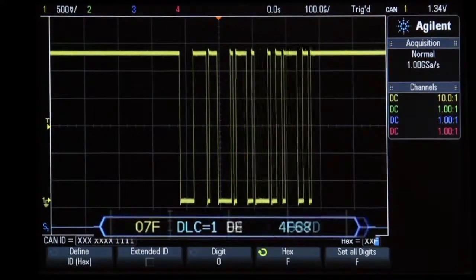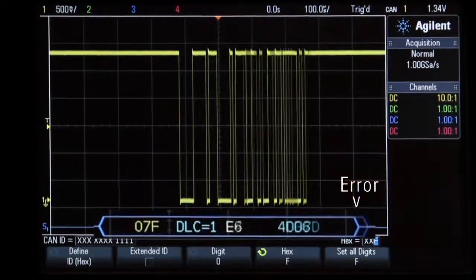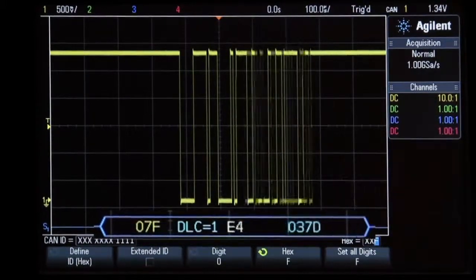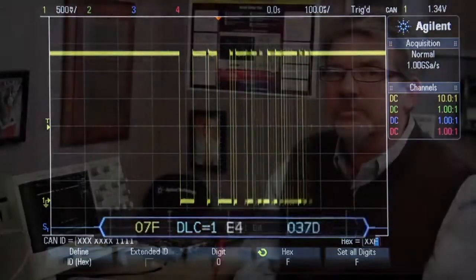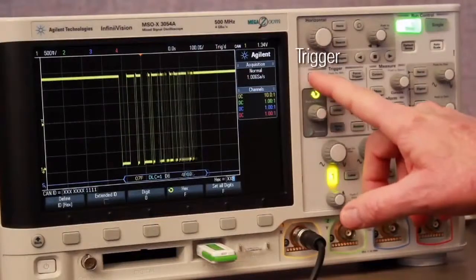Note that we can also see a red error message at the end of this decoded frame. The scope is randomly detecting error frames while triggering on this frame. Let's now set up the scope to trigger on CAN error frames.